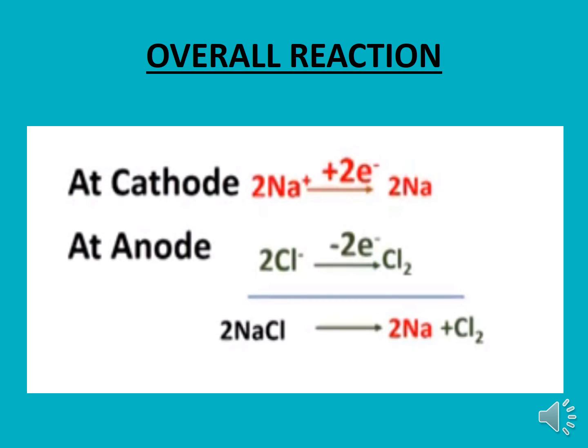By adding the two reactions taking place at the cathode and anode, we get the overall reaction. Sodium ions and chloride ions on the left side combine to form 2NaCl, and on the right side we get two moles of sodium and one mole of chlorine gas. So the overall reaction is: 2NaCl → 2Na + Cl₂.